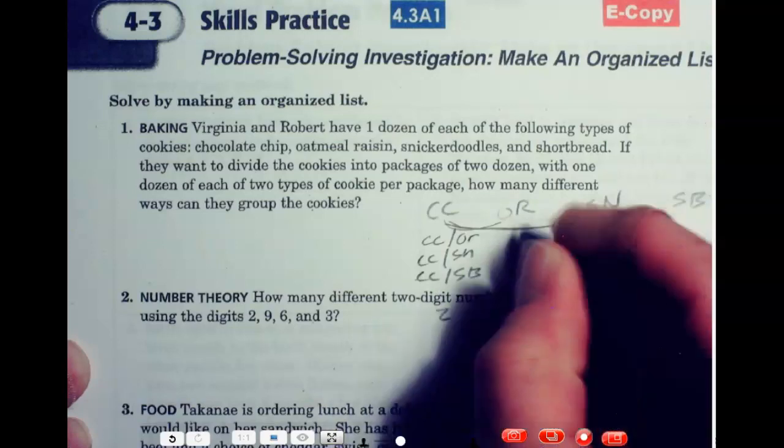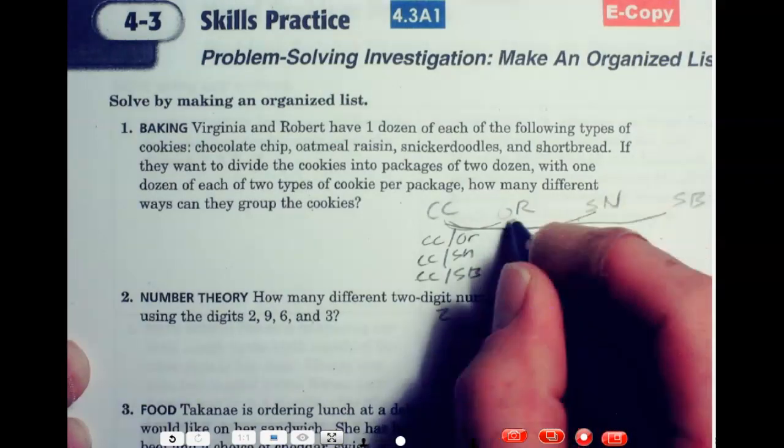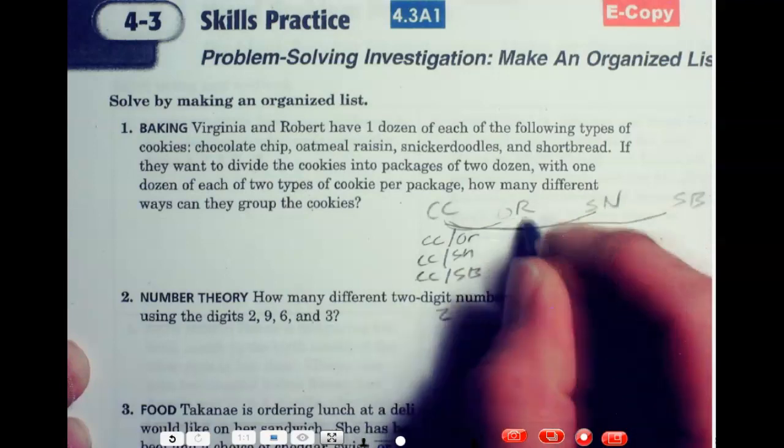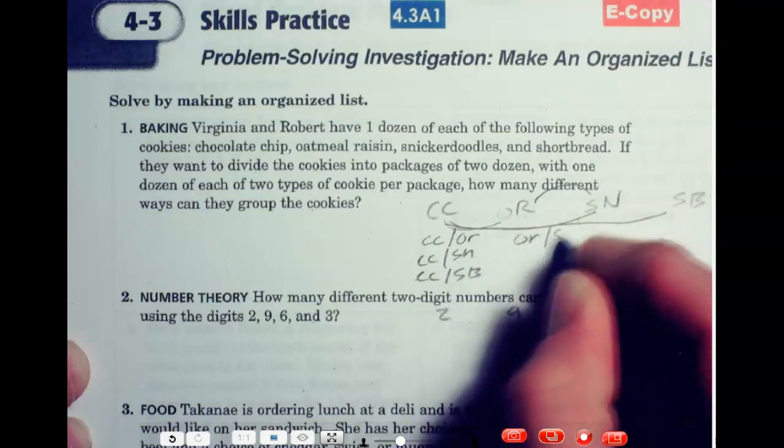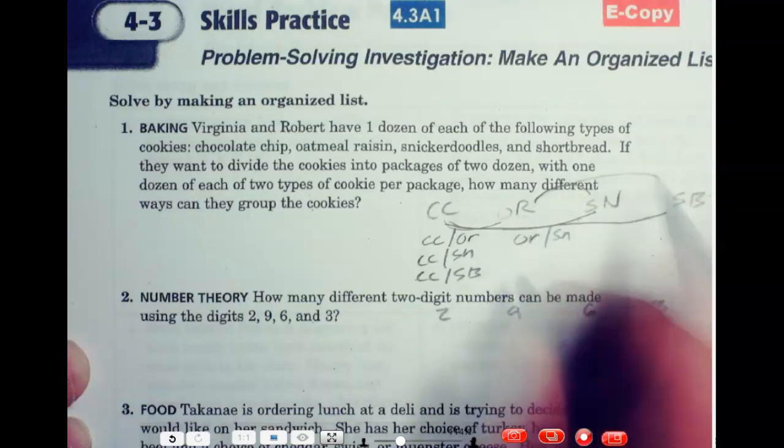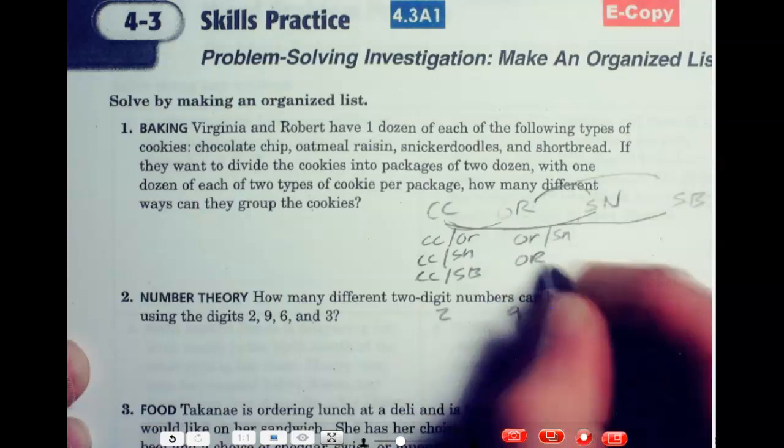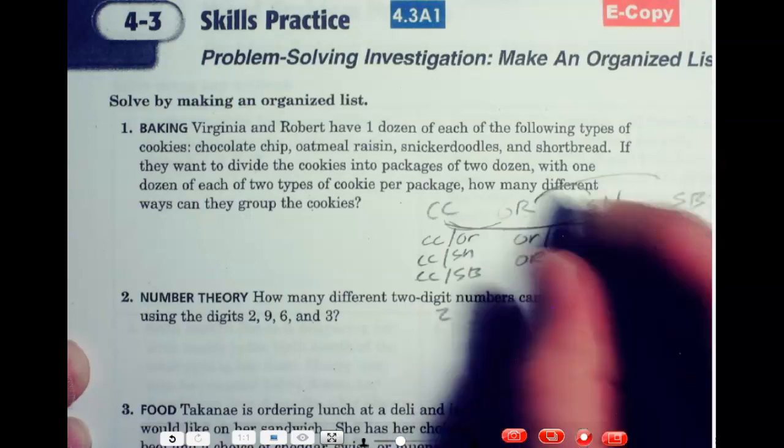And then you go to oatmeal raisin. Now, you've already had oatmeal raisin and chocolate chip, so you're just going to move forward here, and this time we'll go on top. You're going to have oatmeal raisin and snickerdoodle. Or you could have oatmeal raisin and shortbread.